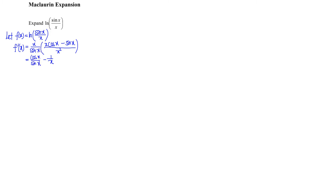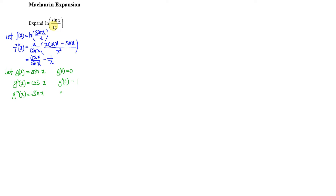So we split this one. We let g(x) be sin x. So we differentiate as usual. Remember to find the value at the point x equal to 0. So when we differentiate sin, we obtain cos. Substitute again: cos(0) is 1. Then we differentiate cos, which gives negative sin.